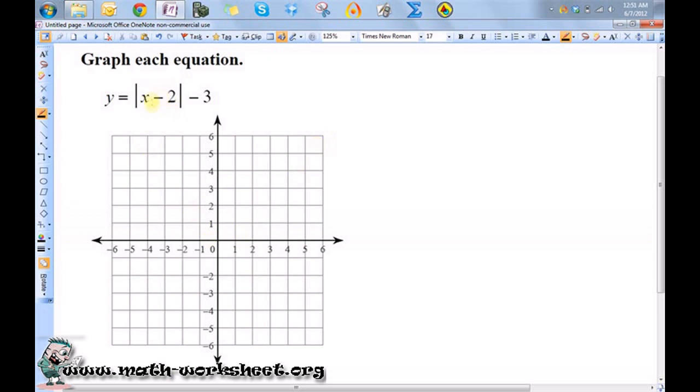Now, if there's a number being added or subtracted from it, this is going to cause a horizontal shift. And if there's a number outside of the absolute value being added or subtracted, that is going to give you a vertical shift.